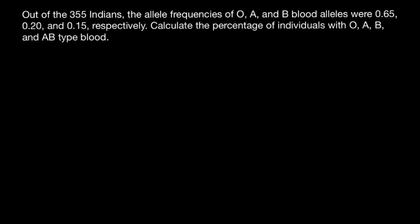Hello and welcome to Nikolai's genetics lessons. Today's problem is: out of 355 Indians, the allele frequencies of O, A, and B blood alleles were 0.65, 0.20, and 0.15 respectively. Calculate the percentage of individuals with O, A, B, and AB type blood. I hope you already know how to solve this type of problem with two alleles.